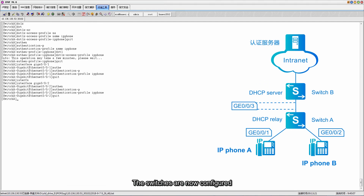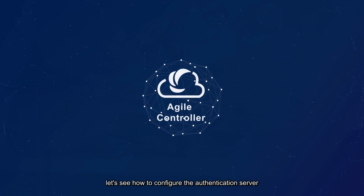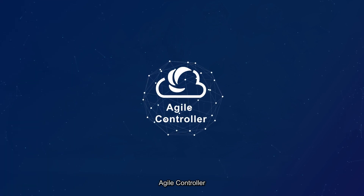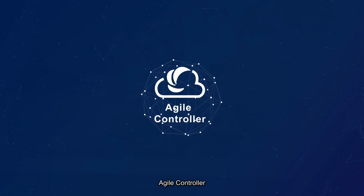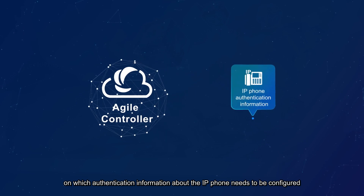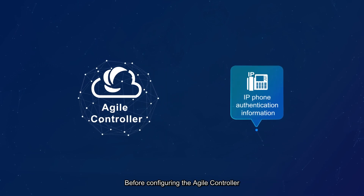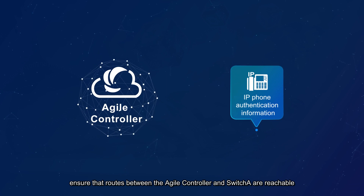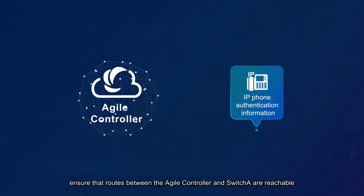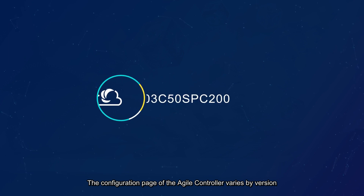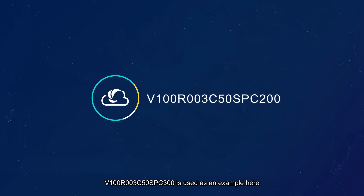The switches are now configured. Next, let's see how to configure the authentication server — the Agile Controller — on which authentication information about the IP phone needs to be configured. Before configuring the Agile Controller, ensure that routes between the Agile Controller and Switch A are reachable. The configuration page of the Agile Controller varies by version; V100R003C50SPC300 is used as an example here.